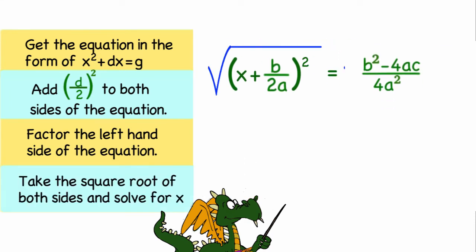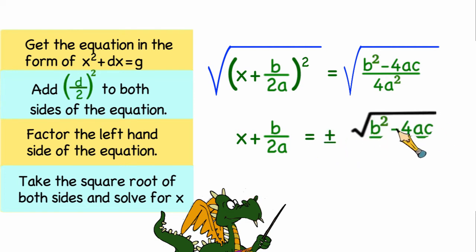Next I'm going to take the square root of both sides. On the left hand side I'll get x plus b over 2a is equal to the right hand side, which is plus or minus the square root of both the top and the bottom of the fraction. The square root of 4a squared is 2a, so that will be my denominator.